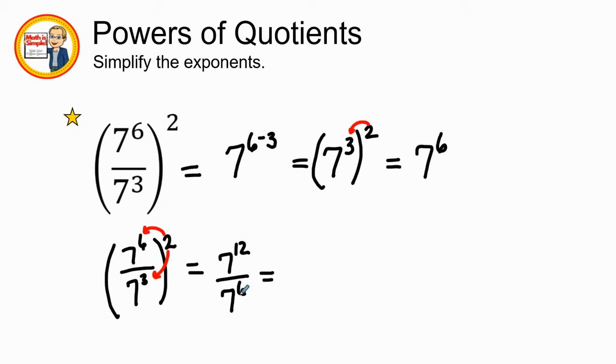To simplify even more, one of the powers of quotient rules is that we cannot have the same base number in the numerator and the denominator. That tells us if we do, we can simplify it even more. We have 7 to the 12th power divided by 7 to the 6th power. We're going to keep our base and subtract our exponents because it's division. Therefore, we have an answer of 7 to the 6th power, which is the same as the other method.